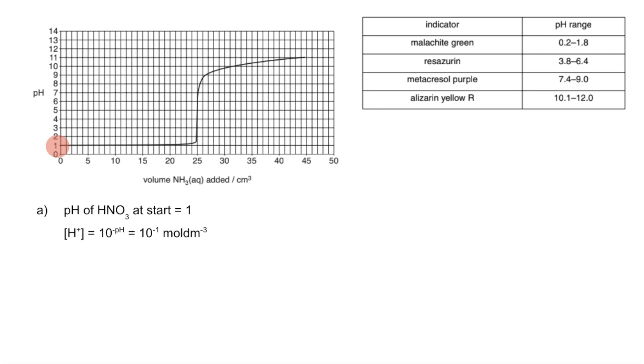So the H+ concentration is 10 to the minus pH which is 10 to the minus 1 or 0.1. Because it's a strong acid it's fully dissociated, so that 0.1 moles per decimeter cubed of H+ ions has come from this. The ratio tells you that must also be 0.1 moles per decimeter cubed.